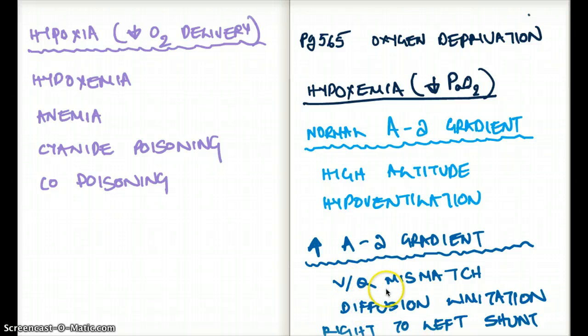Well, V/Q mismatch is the obvious one. Diffusion limitation is also increased A-a gradient. Right to left shunting is also going to cause hypoxemia with an increased A-a gradient, because, you know, then there will be a huge difference between the alveolar and the arterial.